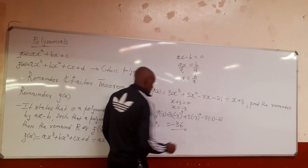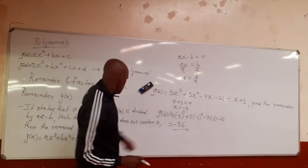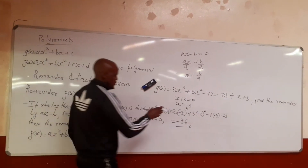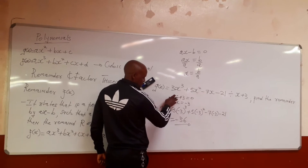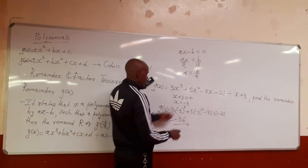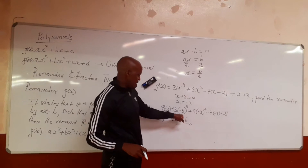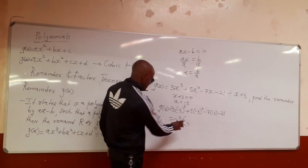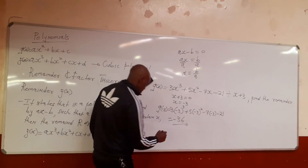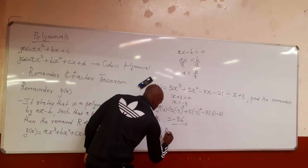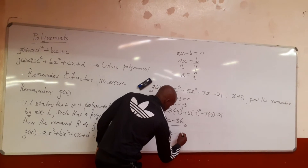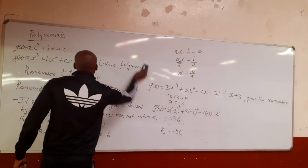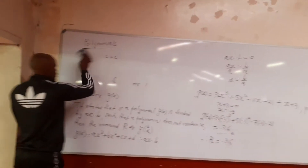This is the answer you obtain after substituting — our ax minus p. In this case we have x plus 3, so after finding that x is negative 3 and putting it in place of x, you find the answer is negative 36. This is our remainder — the remainder is negative 36.